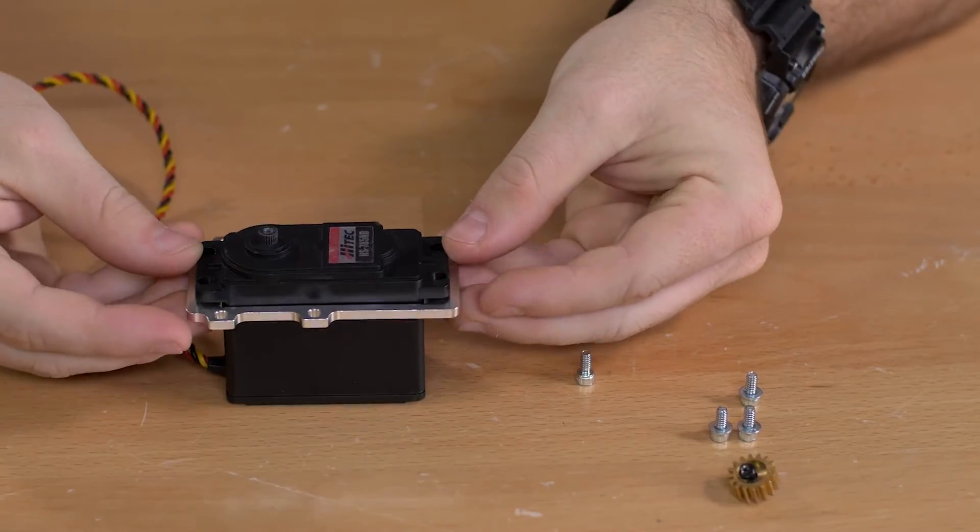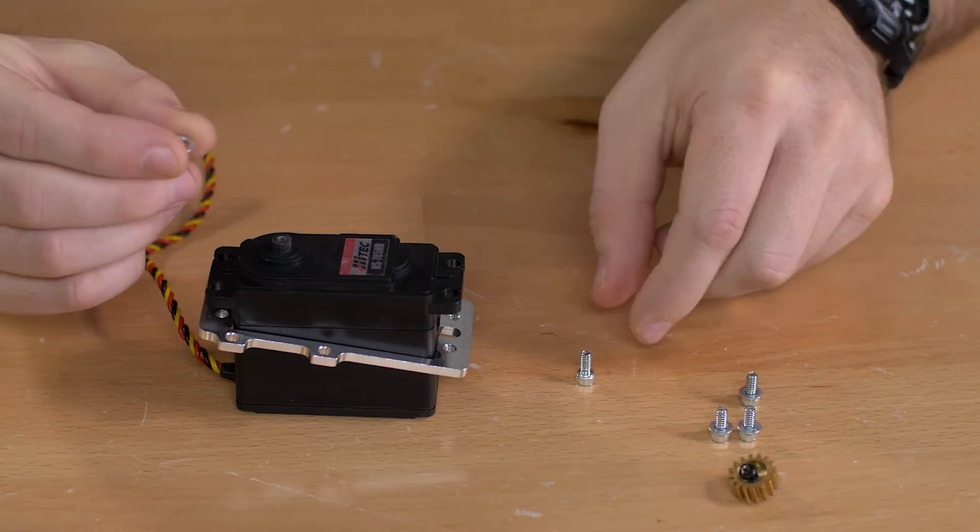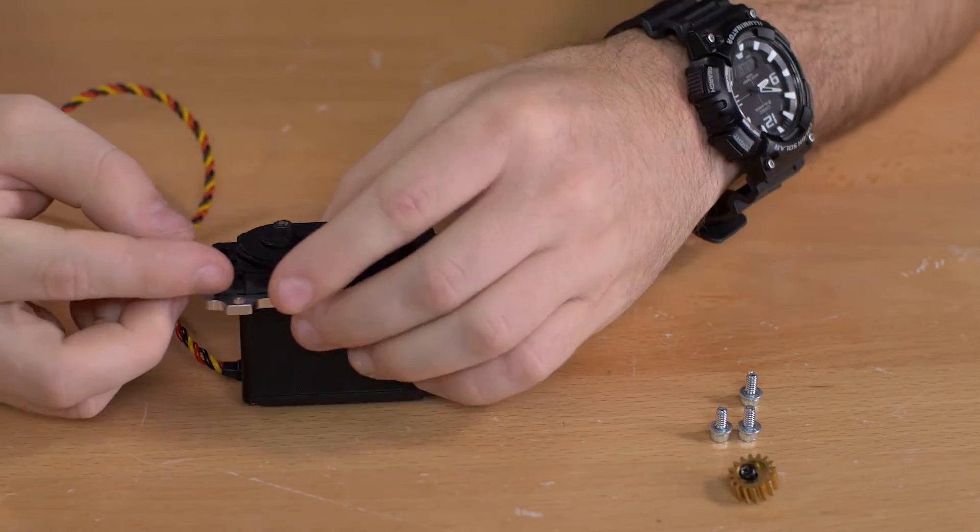It'll go upright like that and then we're going to use the 5/16 inch socket head screws and number 6 washers to fasten that together.